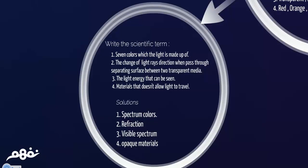Write the scientific term. Seven colors which the light is made up of: spectrum colors. Number two, the change of light ray direction when passed through separating surface between two transparent media: refraction. Number three, the light energy that can be seen. We said that at the beginning of the lesson, visible spectrum. Number four, material that does not allow light to travel. As we said before, we have three types of materials: transparent, semi-transparent, and opaque materials. We said that transparent and semi-transparent materials allow light to travel. And the only one that does not allow light to travel and form a shadow is opaque materials, such as wood.